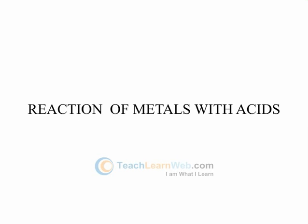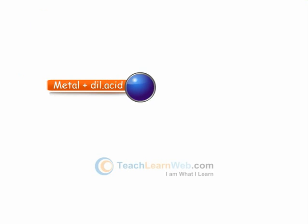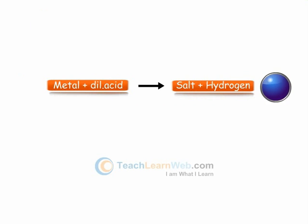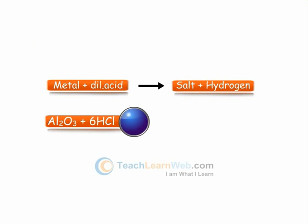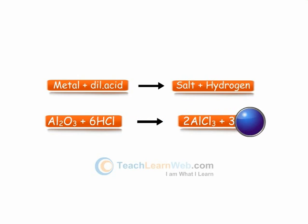Reaction of metals with acids: Metals react with acids to give a salt and hydrogen gas. Aluminium oxide, when reacted with hydrochloric acid, gives aluminium chloride and water.